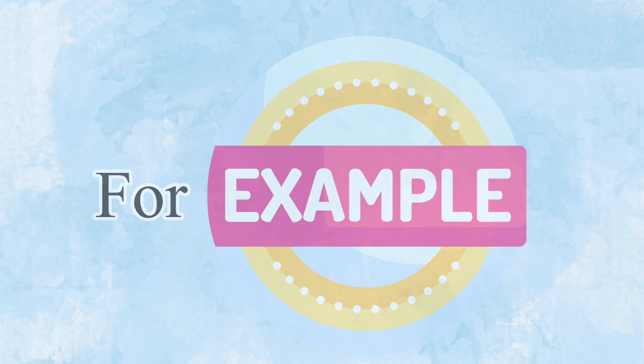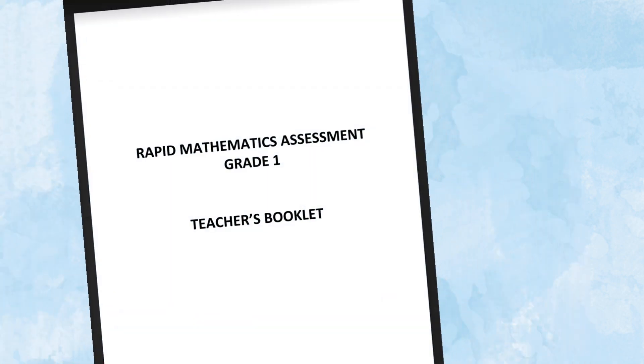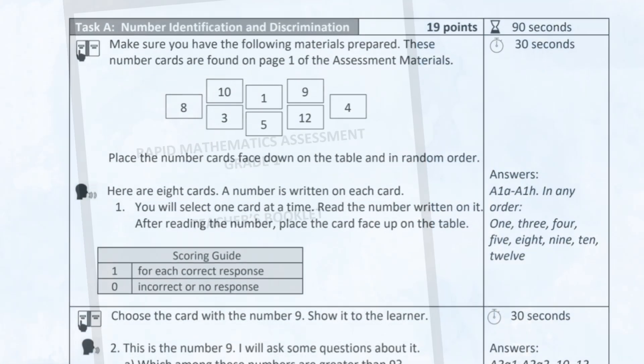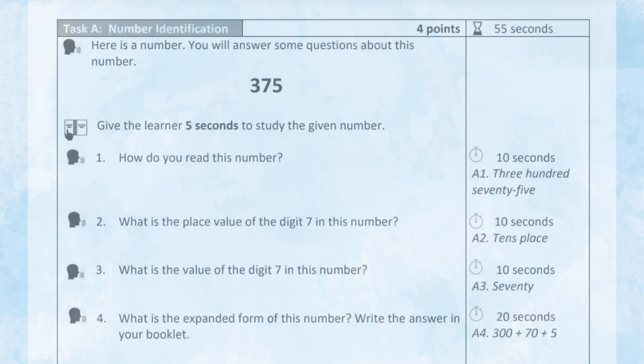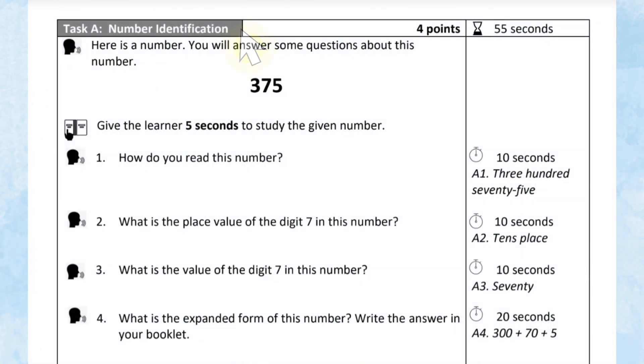For example, let's take a look at the Teacher's Booklet. You can see here the different icons needed to be considered. For Task A, number identification, we have given 55 seconds to do the task. We are going to read orally to the learner those with icon number 1.